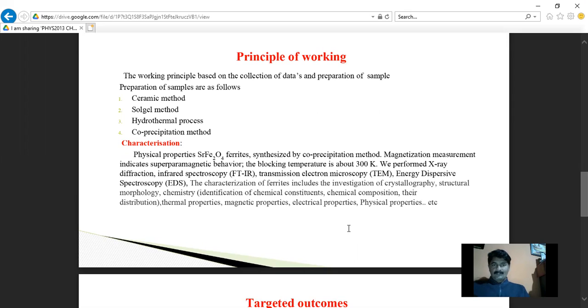Similarly, after completion of this preparation we need to characterize the samples. So here I have mentioned the physical properties of strontium ferrite synthesized by co-precipitation method. Magnetization measurement indicates superparamagnetic behavior. The blocking temperature is about 300 kelvin. We performed X-ray diffraction, infrared spectroscopy, transmission electron microscope, and energy dispersive spectroscopy (EDS).